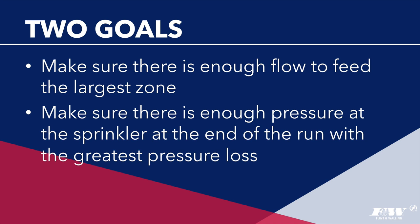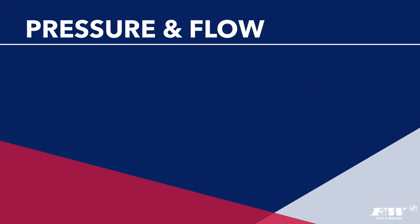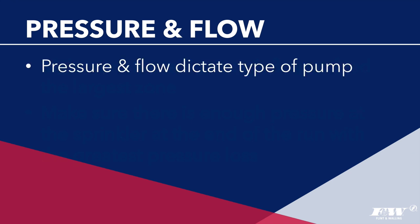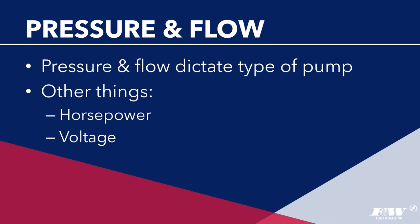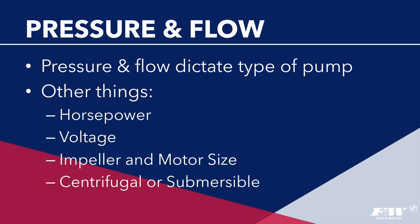If you're servicing an irrigation system, you know that if there's a problem with a sprinkler — apart from a broken or defective head — there's either not enough flow to the sprinkler head or not enough pressure to make it operate correctly. Pressure and flow are the two things that matter, and they dictate the choice of pump more than anything else. All other pump characteristics — horsepower, voltage, impeller and motor size, centrifugal or submersible — are in the service of creating enough flow for the largest zone and enough pressure to power every sprinkler head.